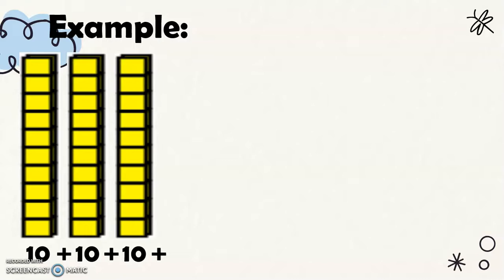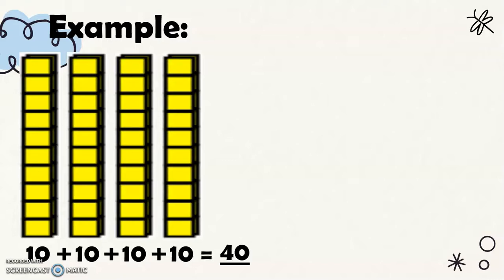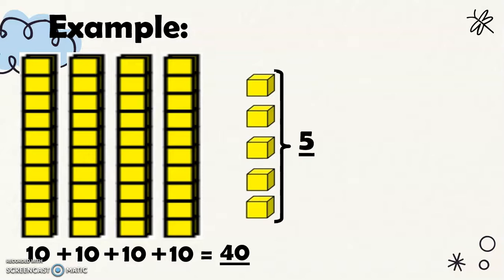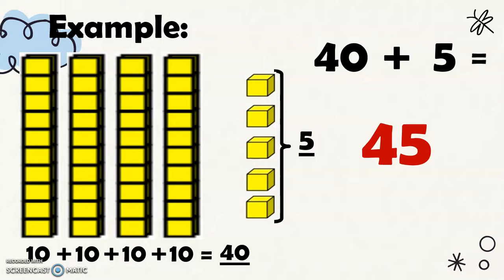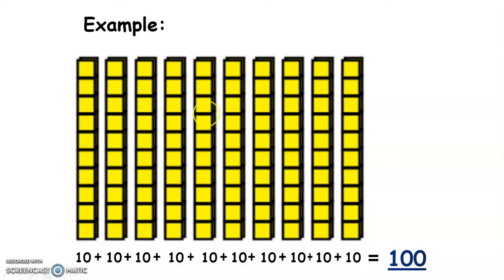Another example: we have four rods or forty blocks and five units. When we combine them, we have forty-five blocks in all. And of course, if we combine all ten rods together, then we'll have one hundred blocks in all — or a flat.